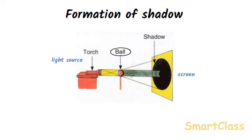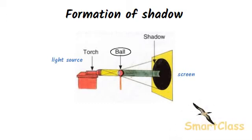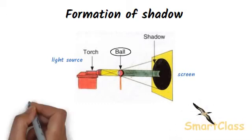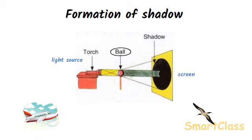Now if we keep increasing the distance of the cardboard screen from the ball, the shadow of the ball becomes fainter and fainter. And when the screen is at a large distance from the ball, no shadow of the ball is seen on the screen. This is also the reason we do not see shadows of birds and aeroplanes flying high in the sky.